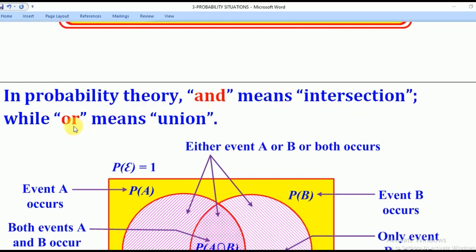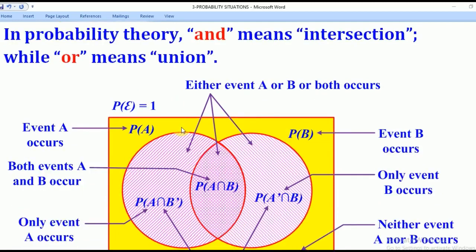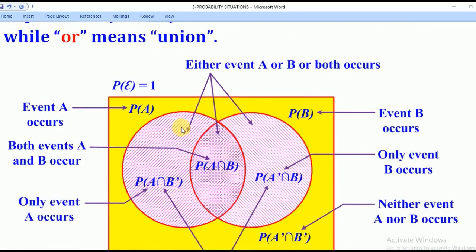While OR means union. Let's consider two events A and B. The Probability that event A occurs is denoted by P(A), and will be equal to A intersection B complement plus A intersection B. The Probability that event B occurs is denoted by P(B) and is given by A intersection B plus A complement intersection B.